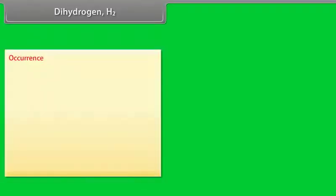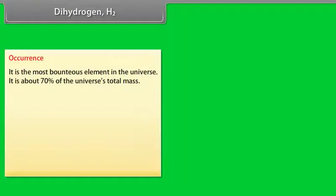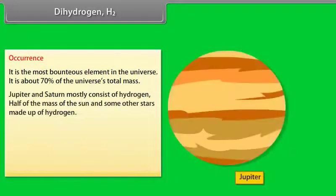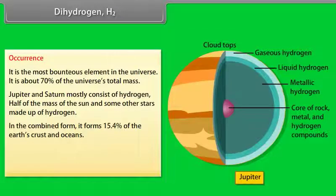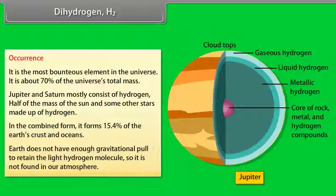Dihydrogen H2 Occurrence. Dihydrogen is the most spontaneous element in the universe. It has about 70% of the universe's total mass. Jupiter and Saturn mostly consist of hydrogen. Half of the mass of the Sun and some other stars made up of hydrogen. In the combined form, it forms 15.4% of the Earth's crust and oceans. Earth does not have enough gravitational pull to retain the light hydrogen molecule, so it is not found in our atmosphere.